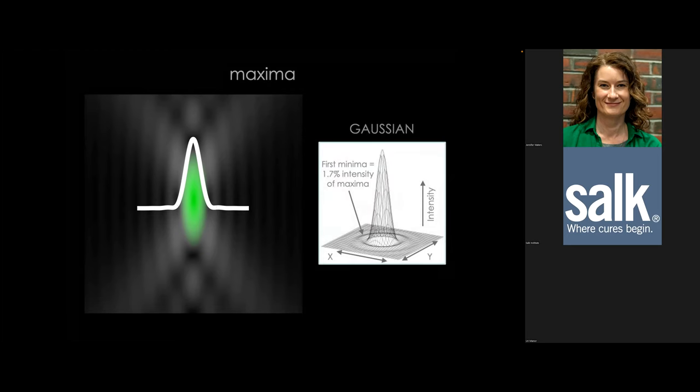Looking at the 3D profile of the PSF maximum, the central maximum is much brighter than the first bright ring. This is why we generally just focus on the maximum — those surrounding rings are very dim relative to it and hard to detect. If you do see them in your image, you're doing great. But it's quite typical that you won't.